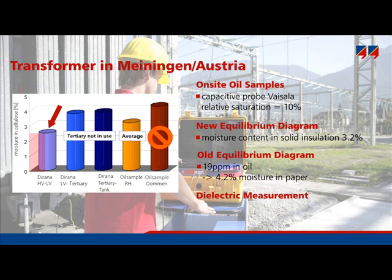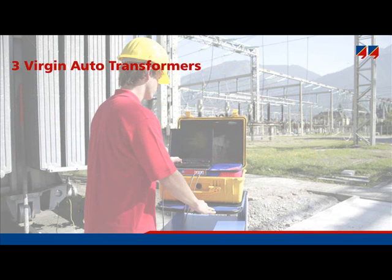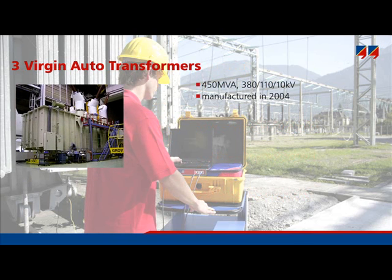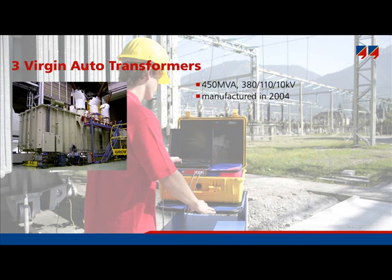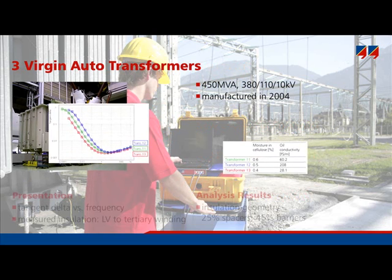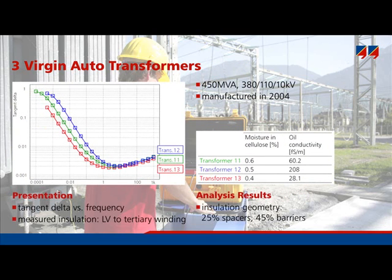The last example concerns three new auto-transformers. The measurement was made in the factory just after they were manufactured. This graph shows the dissipation factor of all three transformers — they all have dry insulation values between 0.4% and 0.6%. This example illustrates that a dielectric response measurement can also check the quality of the production process in a transformer factory, proving that the evaluation is just as applicable to new transformers as to old ones.